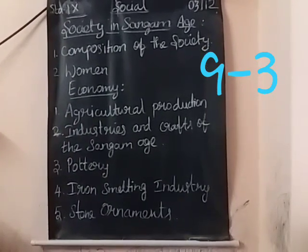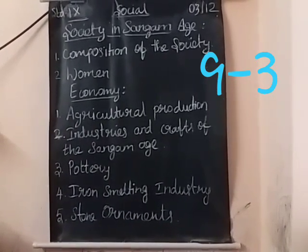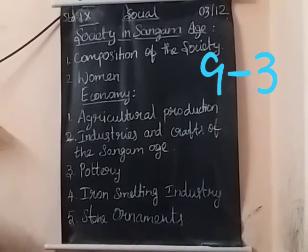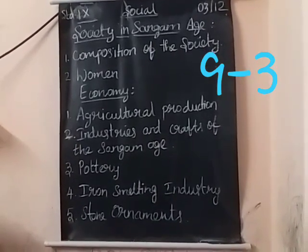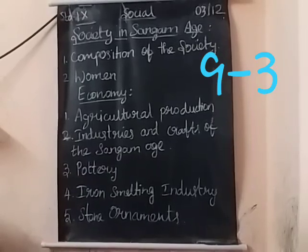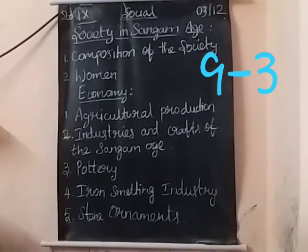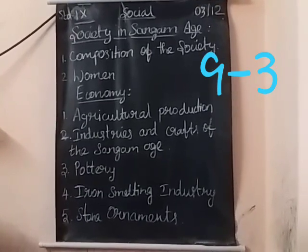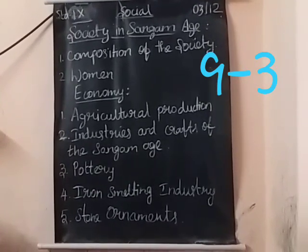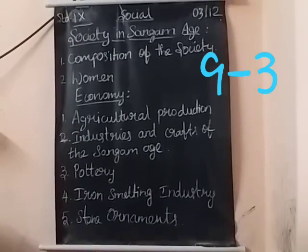In the Sangam age, there were professional groups that produced various commodities. The system of production of commodities is called industries, as one professional group converted crafts into goods.